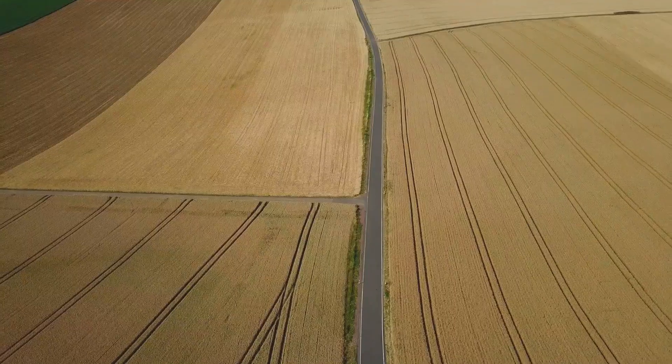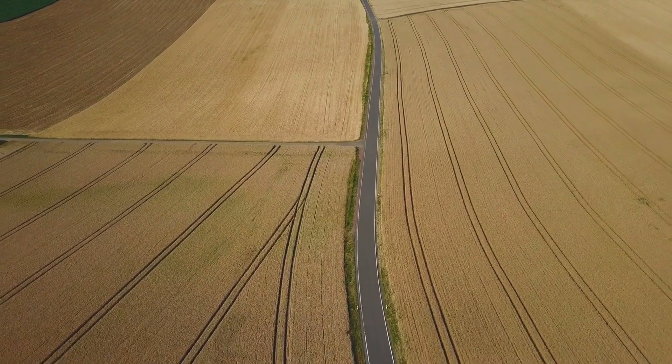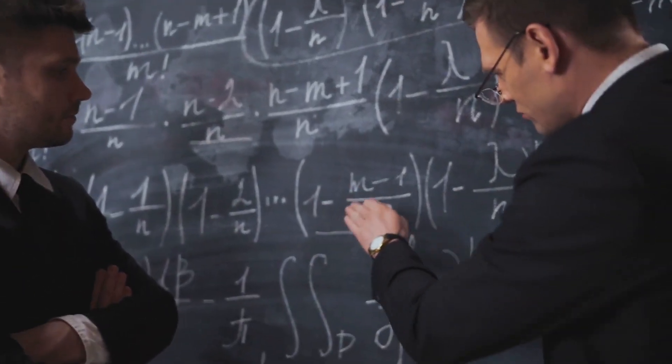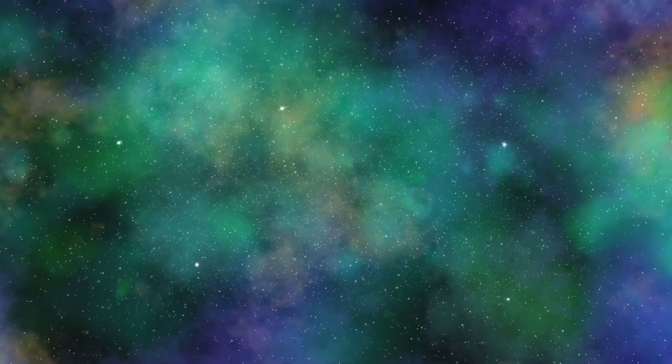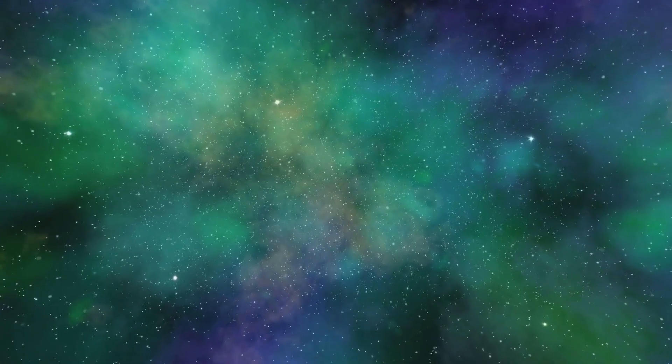Let's begin with the man behind the theory, Albert Einstein. Born in 1879 in Germany, Einstein showed early signs of genius, yet he struggled in school due to its rigid structure. He later pursued physics and made groundbreaking contributions, including the theory of relativity. In 1905, while working as a patent clerk, he published four pivotal papers, one of which introduced special relativity, forever changing our understanding of space and time. Einstein continued to expand on his ideas, leading to general relativity in 1915, providing a new framework for gravity.